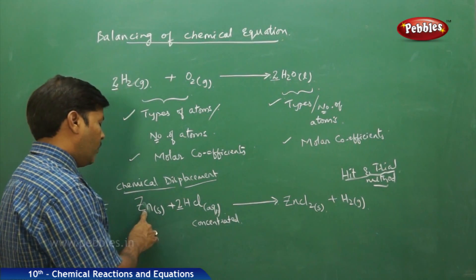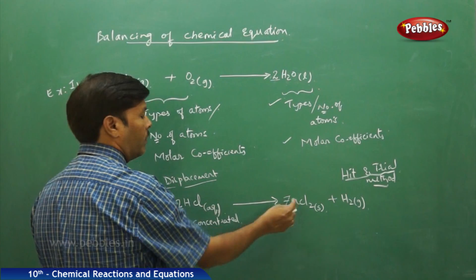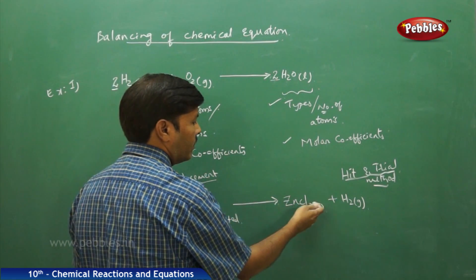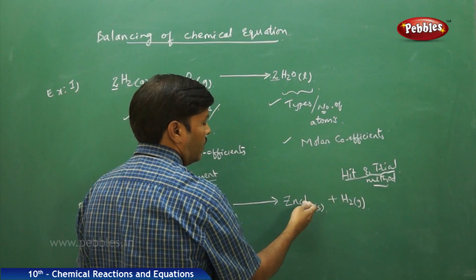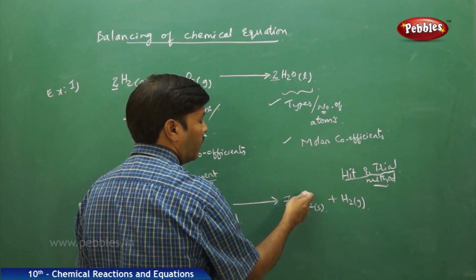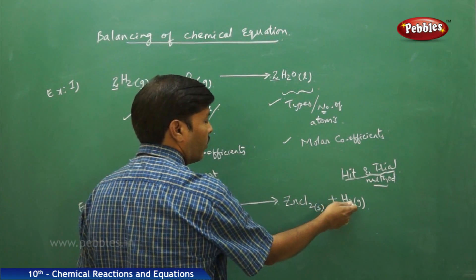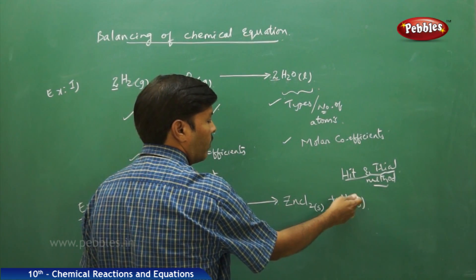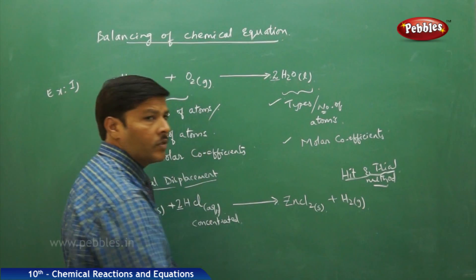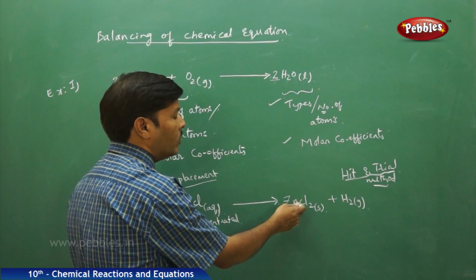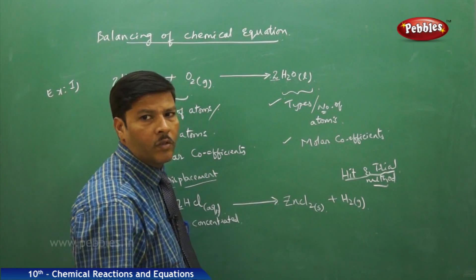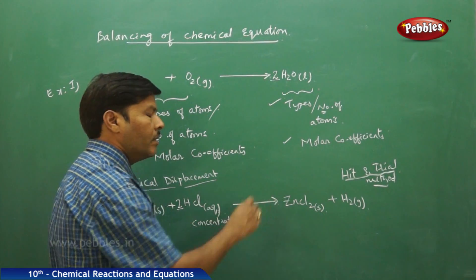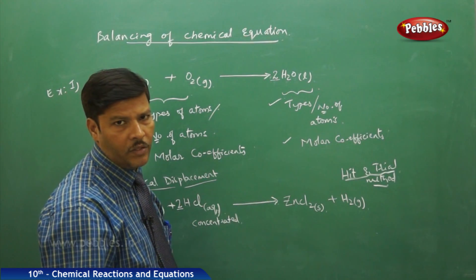Counting the atoms: one atom of zinc on each side, 2 hydrogens and 2 chlorines on the reactant side, and 2 chlorines (in zinc chloride) and 2 hydrogens (in H₂ gas, which contains 2 hydrogen atoms) on the product side. Therefore, the entire chemical equation is balanced.